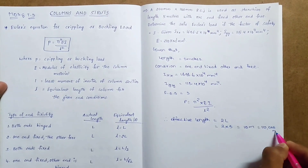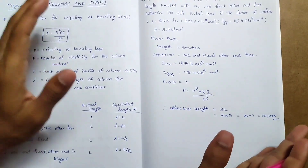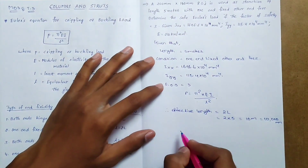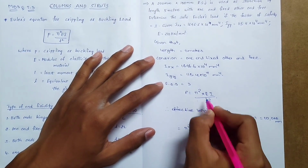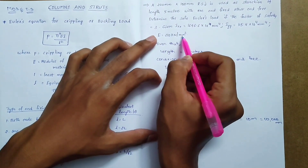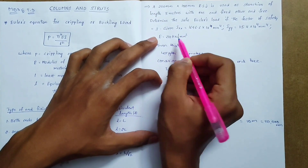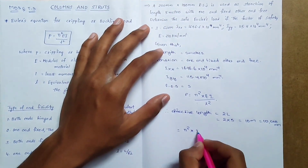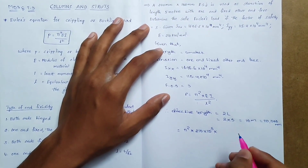Now we find Euler's critical load: P = π² × E × I / Le². Here E = 210 kN/mm² = 210 × 10³ N/mm², and we substitute the values to calculate the Euler's load.